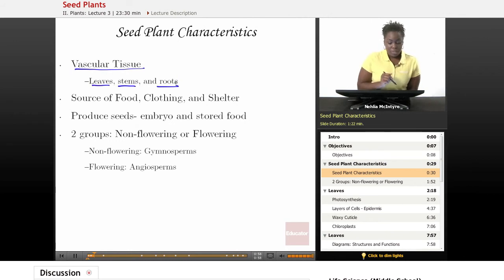Another characteristic of seed plants is that they are a major source of food, clothing, and shelter for humans and other animals. When we think about fruit trees, those fruits have seeds inside, and that's a source of food. Cotton helps us to make clothes, and lumber from different trees helps us to make our homes.